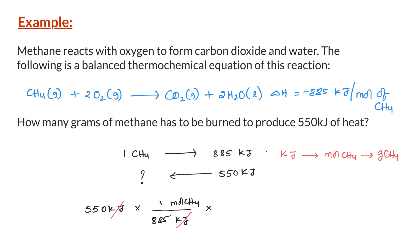Next, we need to convert moles into grams. We multiply with a conversion factor that has moles of methane in the denominator and grams of methane in the numerator. The molar mass of methane is 16, so 16 grams of methane equals 1 mole of methane. Moles cancel and we have only grams left. If we do the math, we get 9.94 grams of methane.